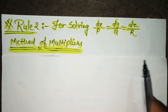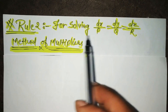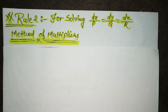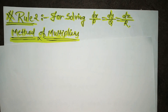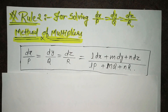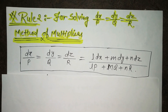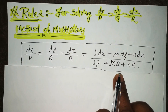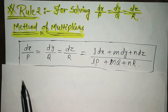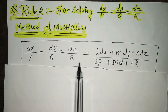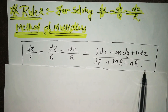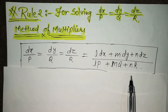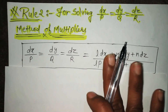This is the format and this is the method. This method has some rules. This equation can be solved with the help of this format, where you can see what P, Q, R and L, M, N are and where they are used. This is the format.